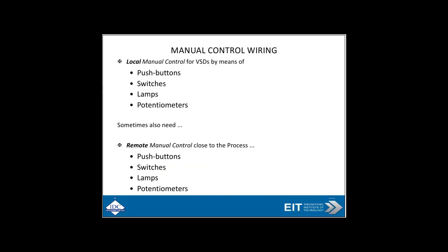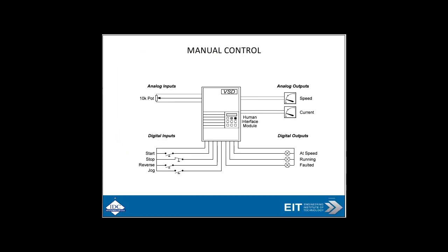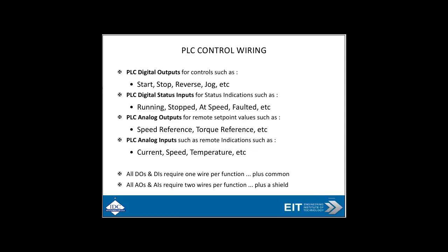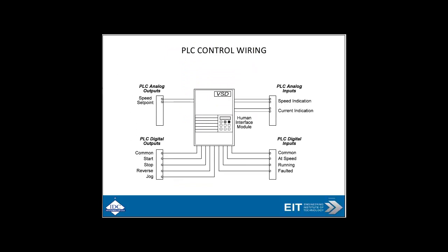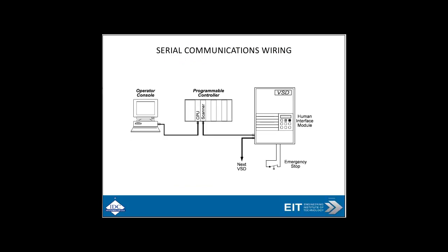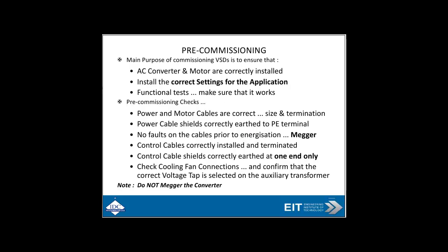Manual control wiring: local control by means of push buttons, or remote control via push buttons close to the process. PLC control wiring is obviously a key part, and you'll probably be using fieldbus standards such as Profibus DP or DeviceNet — or maybe, for the adventurous, Ethernet TCP/IP for your control from the PLC. This interface would probably be Profibus or DeviceNet.